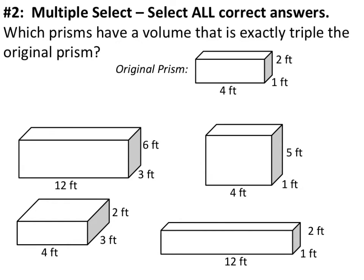This next example is also multiple choice, asking us to find which prisms have a volume that is exactly triple the original prism. We need to look for a prism that has only one dimension tripled compared to the original. The original prism has a length of 4 feet, a width of 1 foot, and a height of 2 feet. There might be more than one right answer.